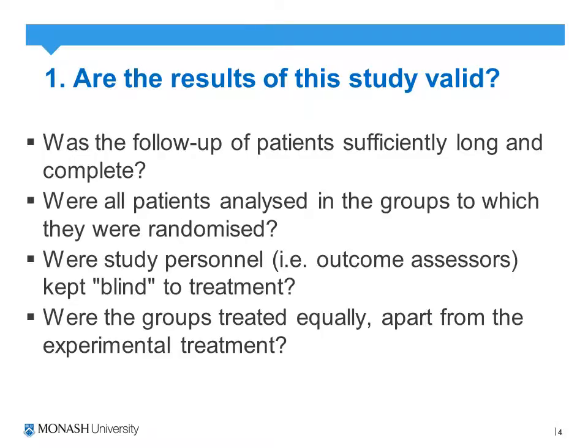The last methodology question is: apart from one group receiving the intervention and the other receiving the control, were they treated in exactly the same manner? This is very important because if we do see a beneficial outcome in the intervention group, we can attribute that benefit to the intervention itself — given that the groups were similar at baseline, received no other differences in treatment, and had no differences in drop-out rates.